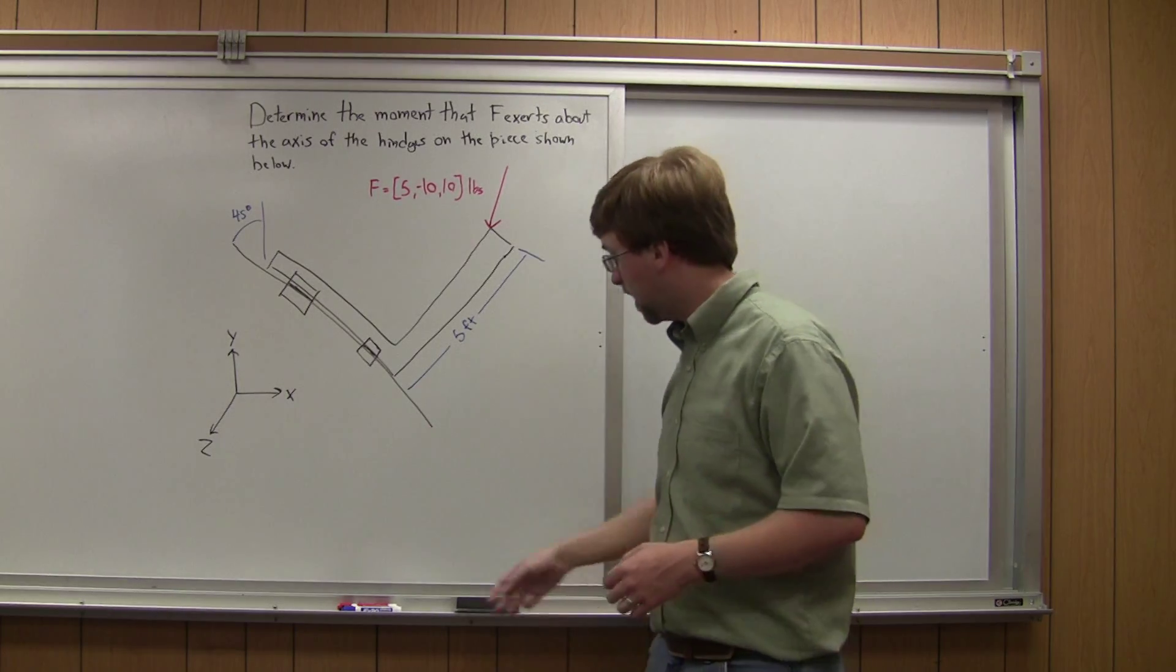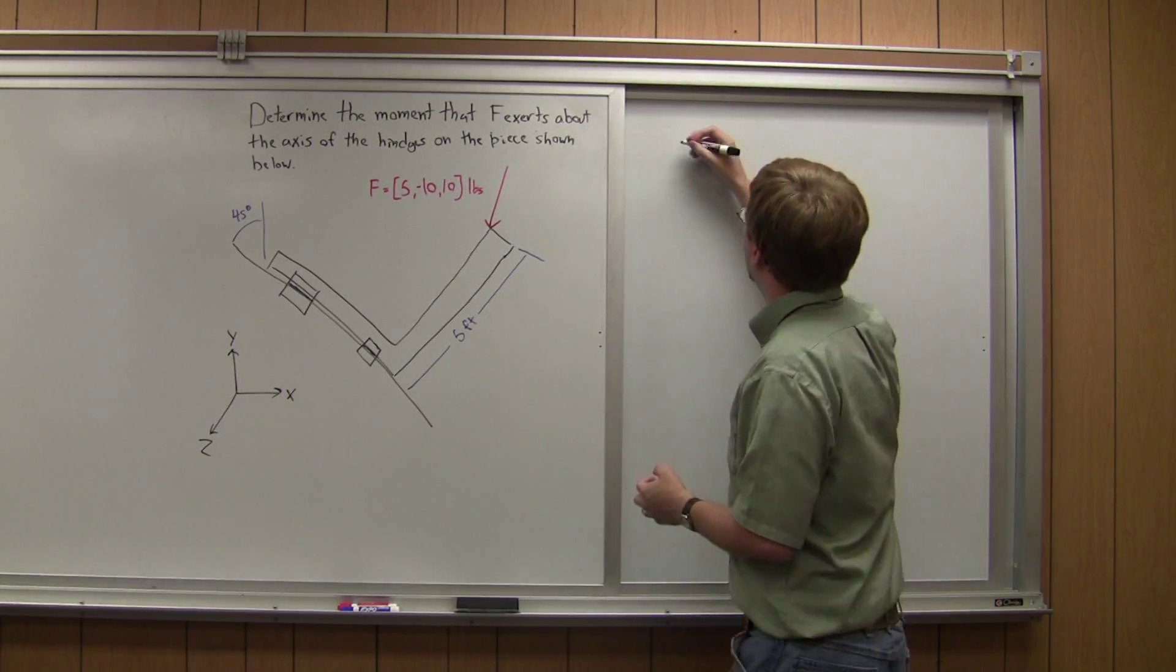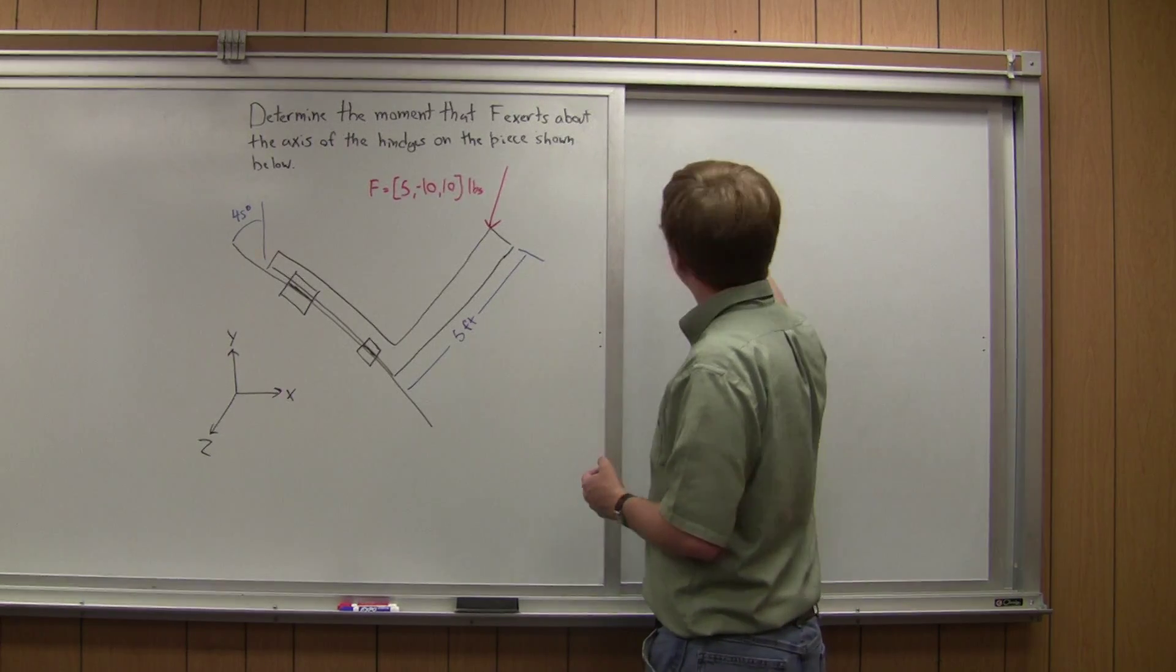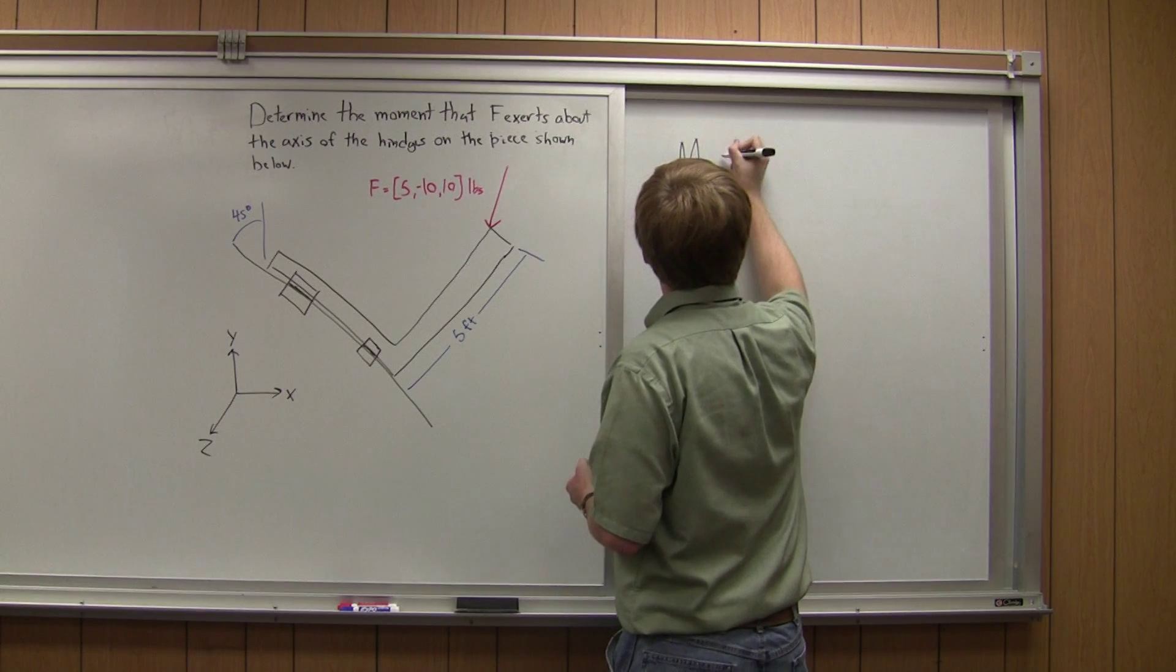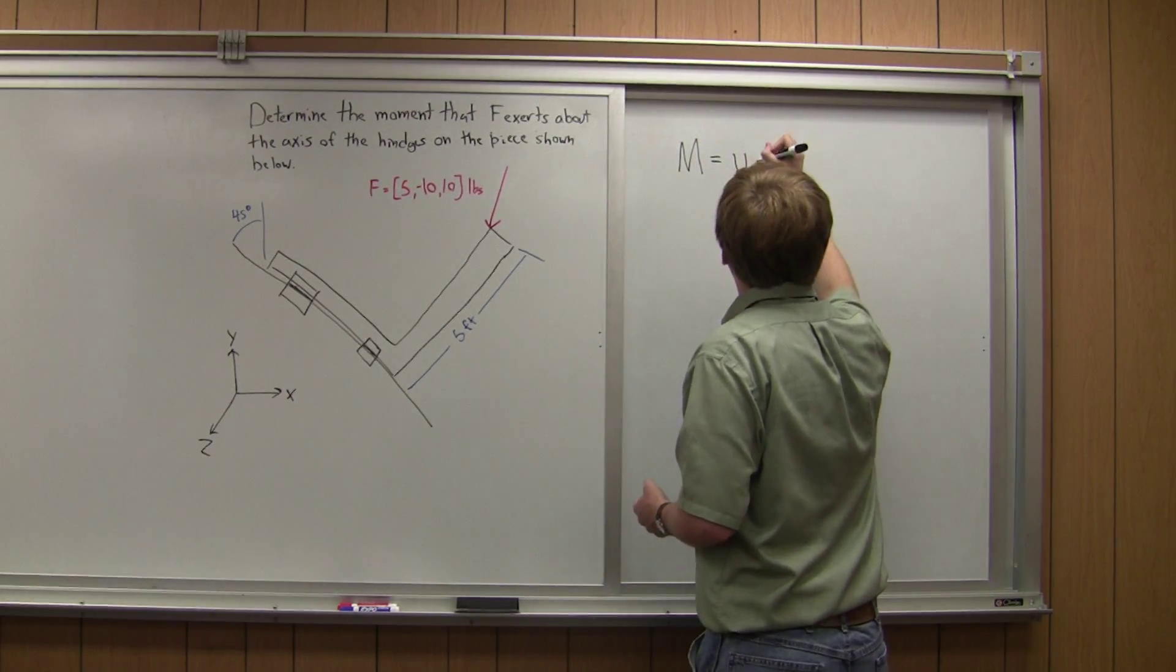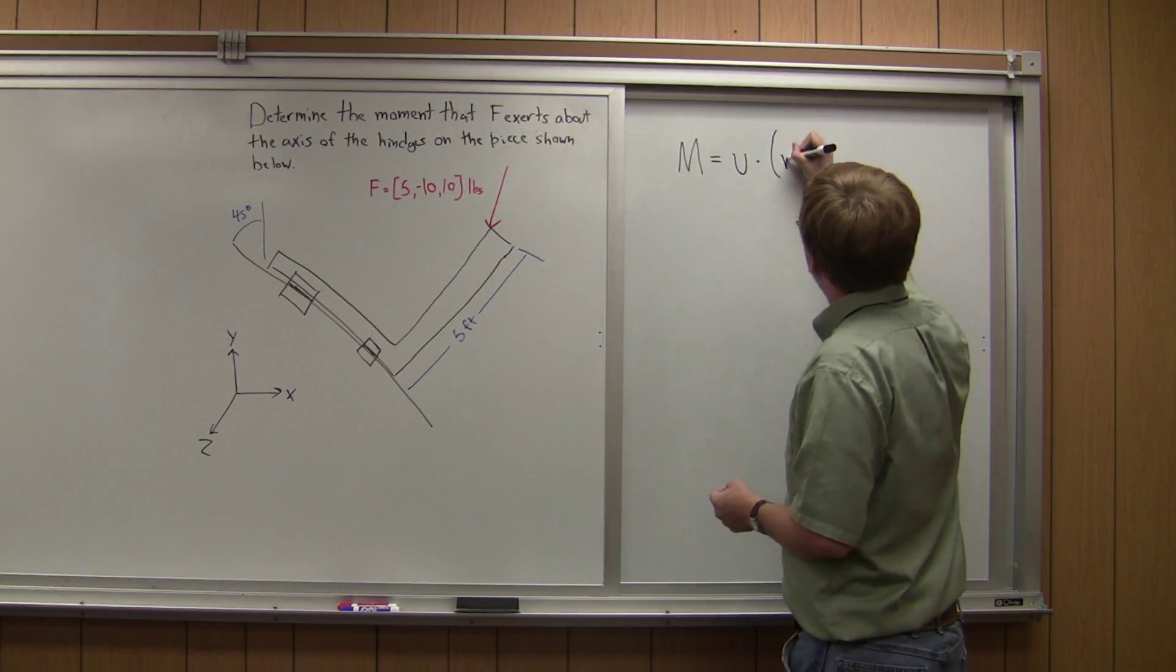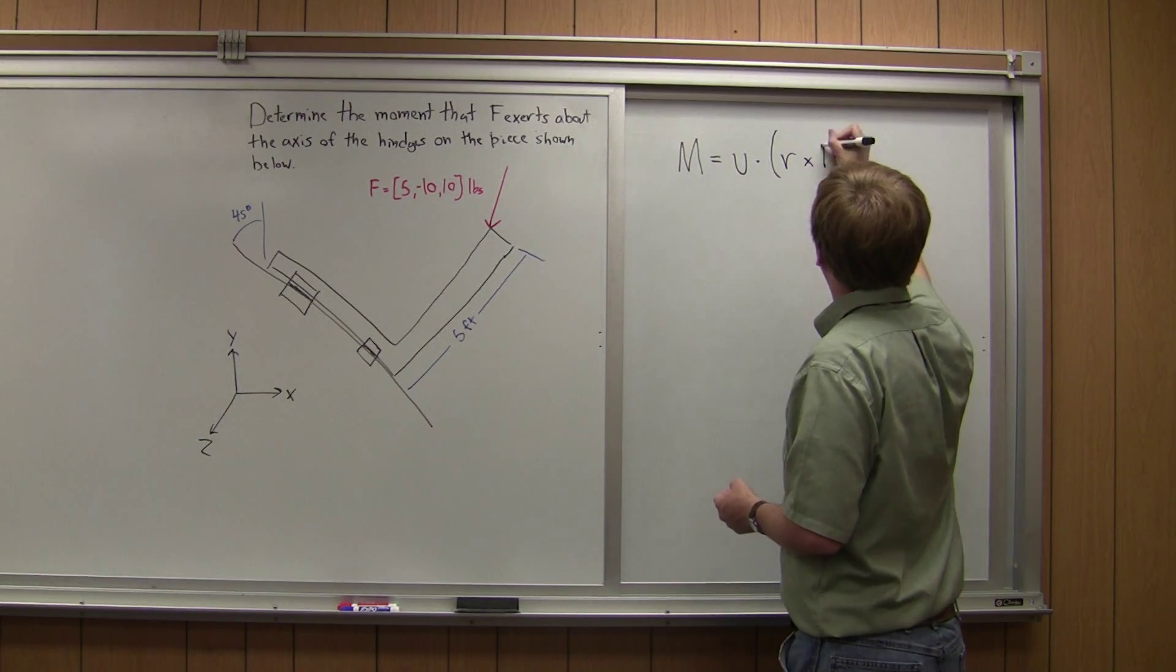So for this calculation we're going to use the vector calculations and we know that the moment about an axis, M, is going to be equal to the vector U with the dot product of R cross F.